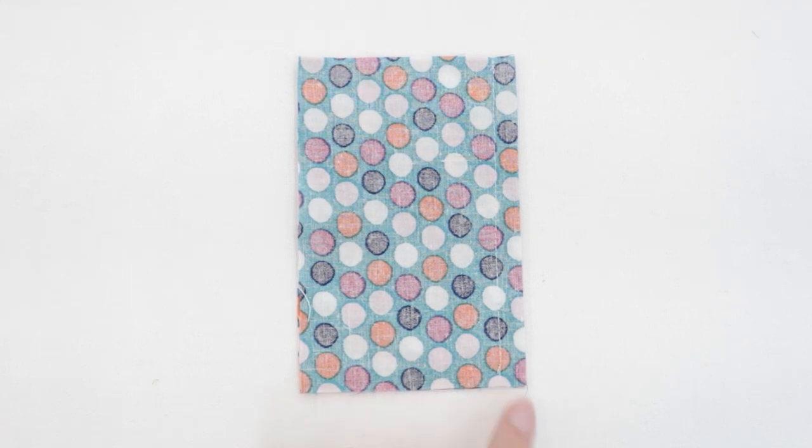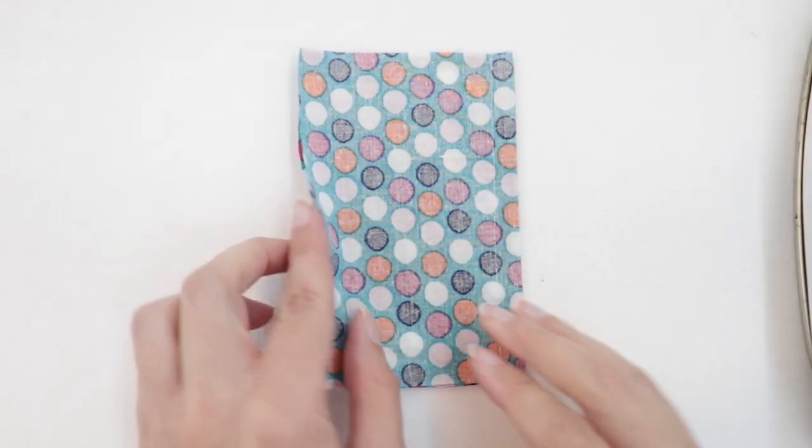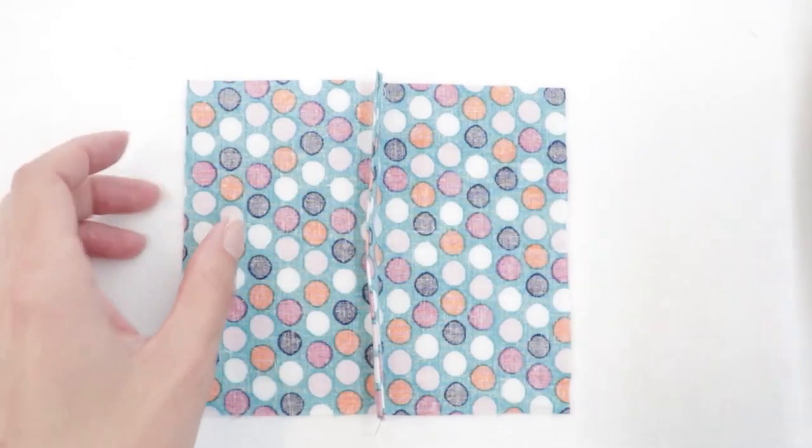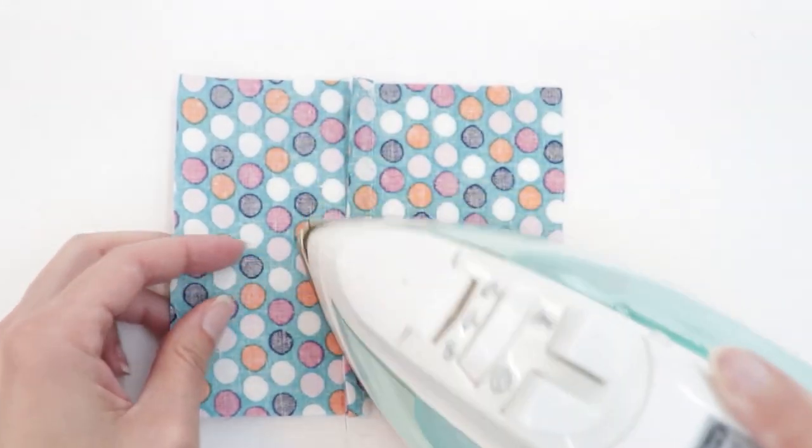If you like, you can then press it one more time to set the stitches, as well as opening it up and pressing the seam allowance to one side to give your front edge a nice crisp fold.